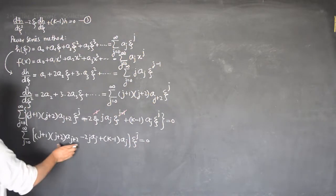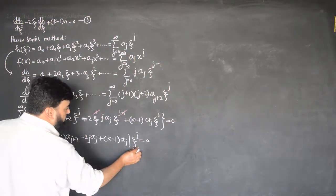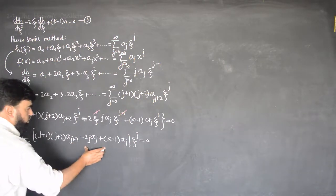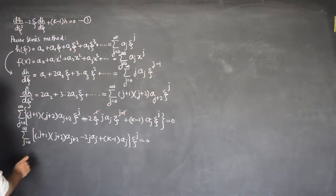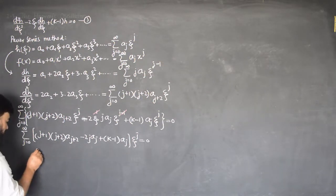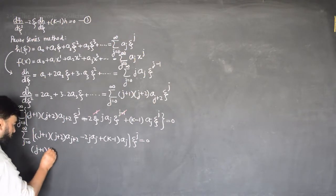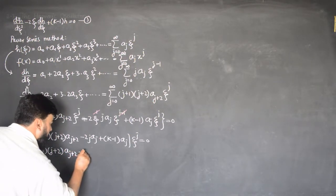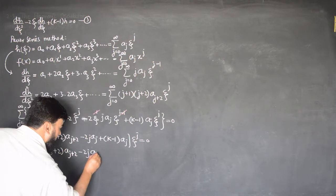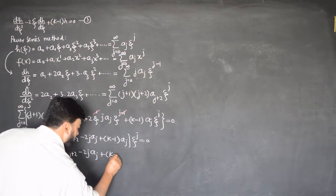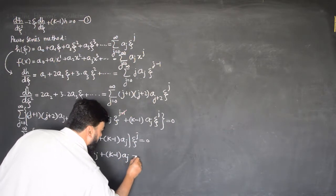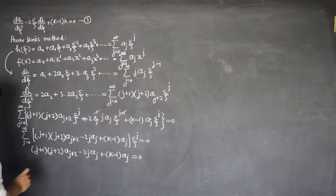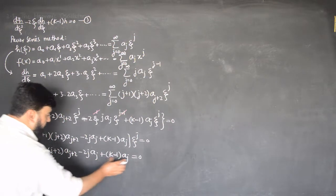As we know, these are the coefficients and ξ is the variable. Since the variable is non-zero, all these coefficients must equal zero. So I can write: (j+1)(j+2) a_{j+2} plus (k minus 1) a_j is equal to 0.